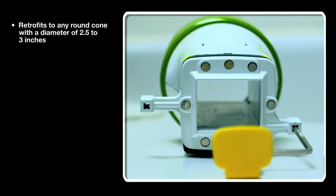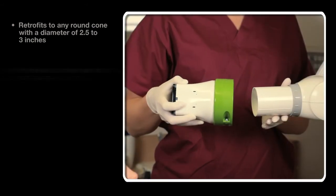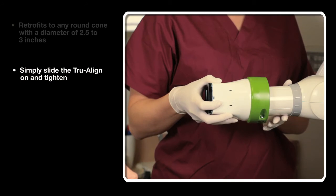TruAlign retrofits to any round cone with a diameter of 2.5 to 3 inches. There's no need to remove the existing cone. Simply slide the TruAlign on and tighten. It literally installs in seconds.